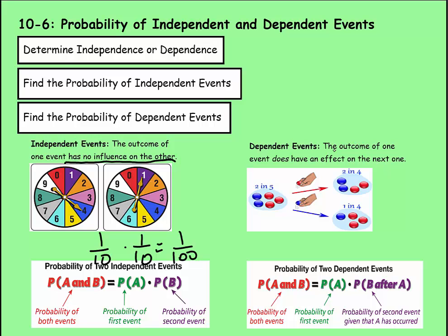Dependent Events are different. The outcome of one event does have an effect on the next one. For example, if I have two blue marbles and three red marbles, it's a 2 in 5 chance that I would get a blue marble, so 2 out of 5. If I take a red marble with the first one randomly, then I'm left with only two red marbles left. See, one of them is gone. And if I'm going to pick another one, it would be a 2 in 4 chance. My chances got better because one of the red ones is gone.